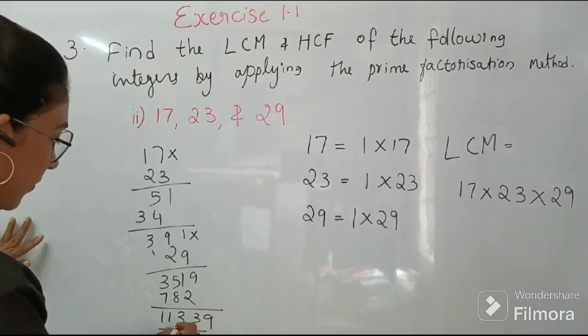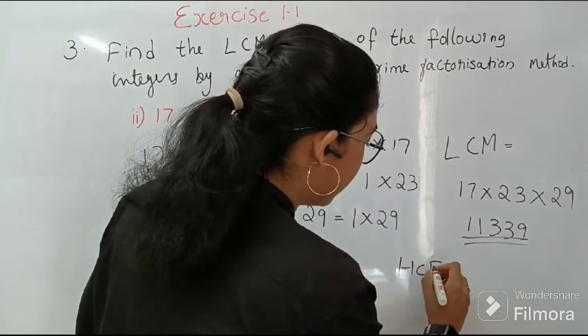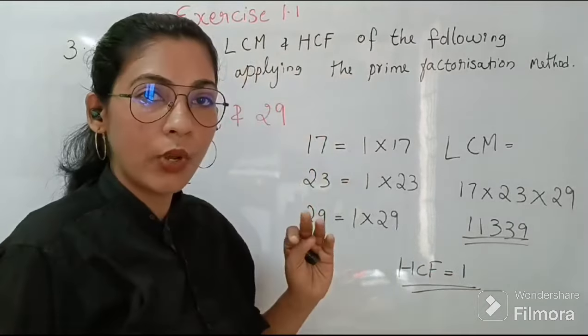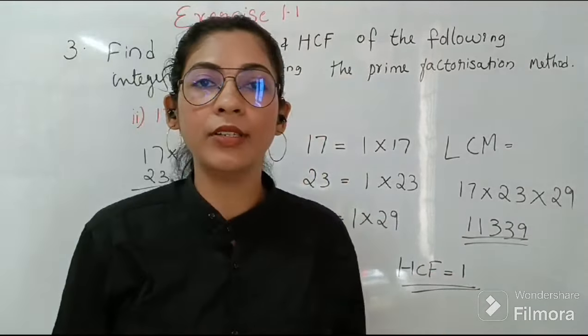So next one is HCF. What is HCF in this case? See there are no common factors in all these 3 numbers. So in such a case we have considered HCF is equal to 1. If there is no any common factors then we take 1 as HCF. So HCF is equal to 1. So this is the answer.